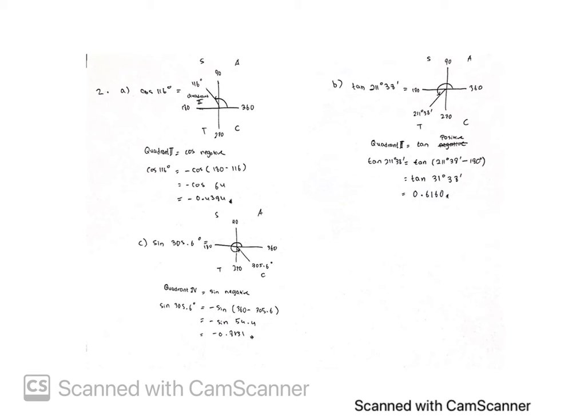Since tan is positive in quadrant 3, you don't have to put negative sign in front of it. Minus the 211 degree 38 with 180, and you will get tan 31 degree 38. And after solving it using calculator, you will get 0.6160.